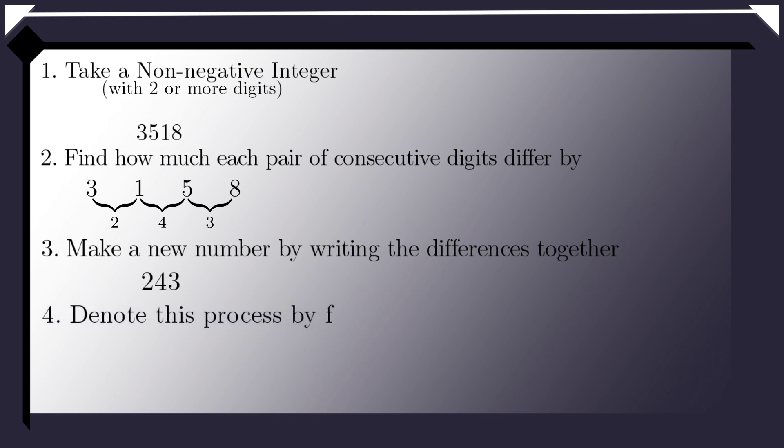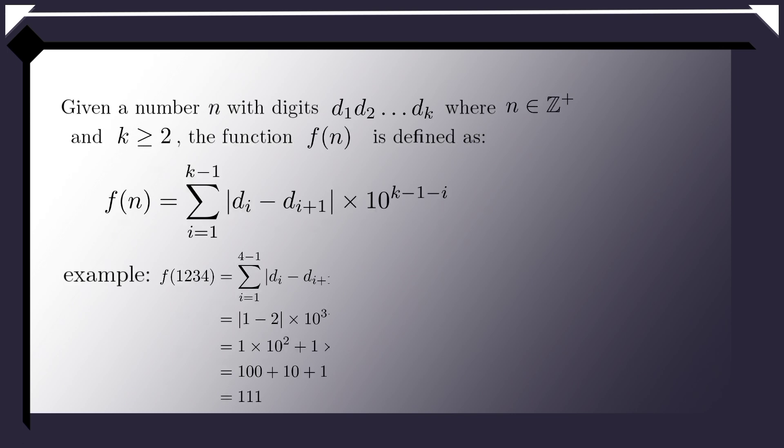Let F be the function that does this to any number with two or more digits. By this I mean the function F represents the first three steps. A number goes in F and suffers through the above three steps, and out comes another number. If you want an unnecessarily complex definition, here is the formal definition of F with example. We take absolute differences of adjacent digits and concatenate them. But if you understood the previous explanation, you don't need to worry.